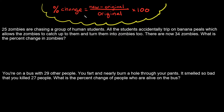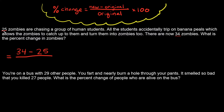Our percent change formula says it's going to be equal to our new amount. So what is the new amount of zombies? Well, there are 34 of them now. So that's the new amount minus the original amount — the original amount of zombies was 25. And then that's going to be divided by the original amount, which again was 25. Then we're going to multiply this by 100 to change it into a percent.